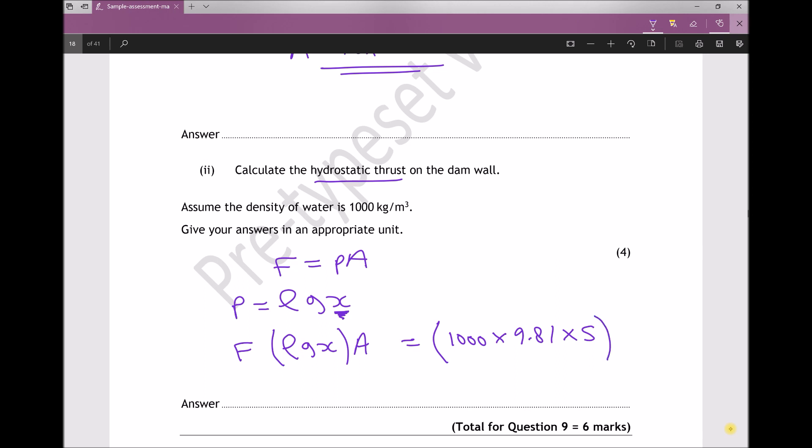And that will give us a thrust force equal to 2,452,500 newtons. Now what I'm going to do is tidy up that answer by expressing it in mega newtons, and the way I get from newtons to mega newtons is moving the decimal back 6 places. Mega is 10 to the 6. And I'm going to express that answer as 2.453 mega newtons to three decimal places.